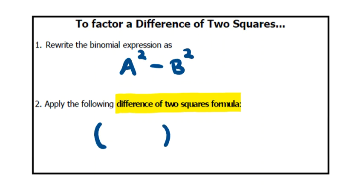Go ahead and write two sets of parentheses, and in your first set of parentheses, you're going to write A plus B, and in your second set of parentheses, A minus B.